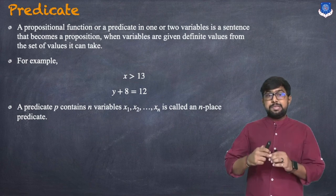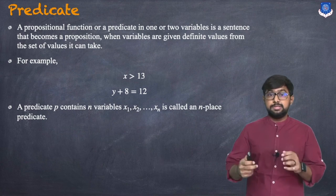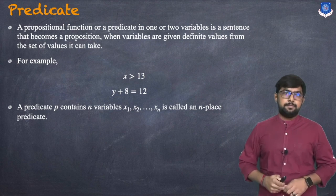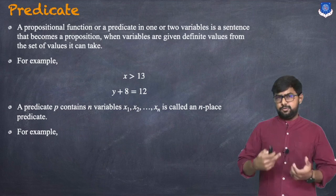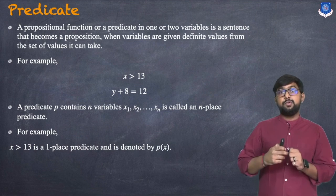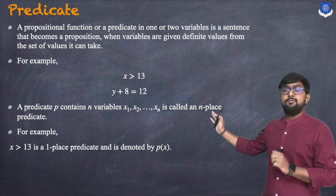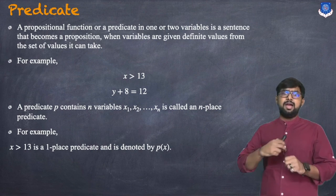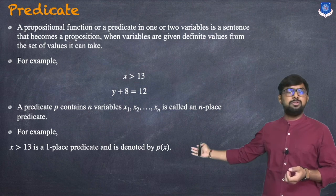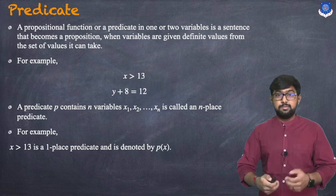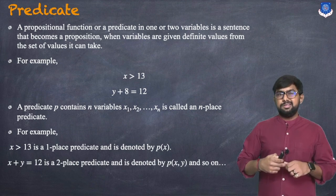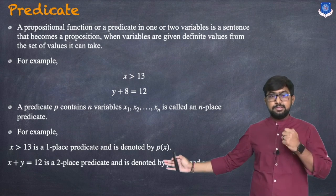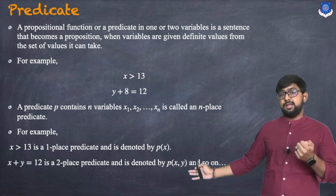A predicate P containing n variables x1, x2, up to xn is called an n-place predicate. For example, 'x is greater than 13' has only one variable, so it is a one-place predicate, denoted by P(x). Then 'x plus y equals 12' is a two-place predicate, denoted by P(x, y).